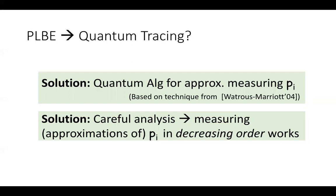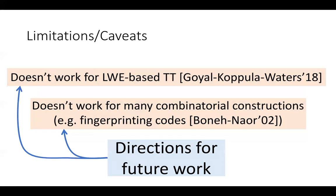This gives a tracing algorithm that works for any private linear broadcast encryption satisfying the syntax and security requirements that we define. Unfortunately, our solution does not handle all PLBE schemes — in particular, for subtle reasons it doesn't work for the learning-with-errors-based traitor tracing by Goyal et al., and it also doesn't work for many combinatorial constructions such as those based on fingerprinting codes. Overcoming these two issues are interesting directions for future work. That concludes my talk — thank you.